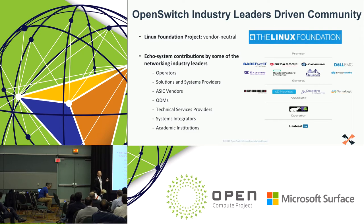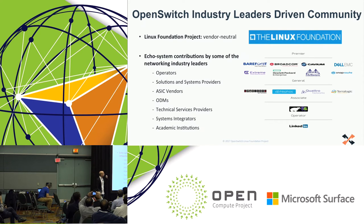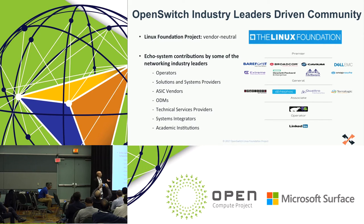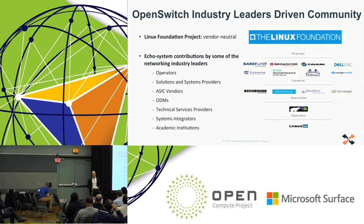This slide talks about the contributors in the OpenSwitch project. From ASIC vendors, we have Barefoot, Broadcom, Cavium, and Mellanox. There's Extreme Networks as an application vendor, SnapRoute, and then Actin, Nefos Quatro Networks, and TerraLogic — all of whom have been involved. We also have input from companies like LinkedIn that help us develop use cases that are very useful for the market.